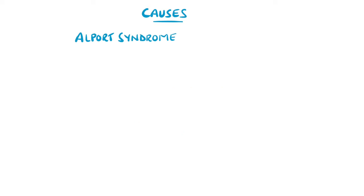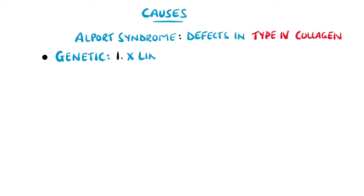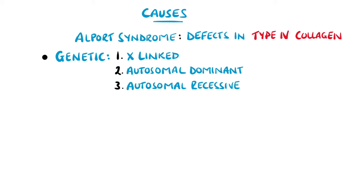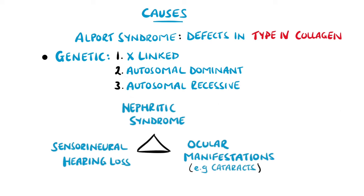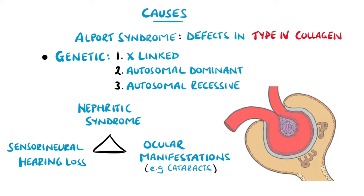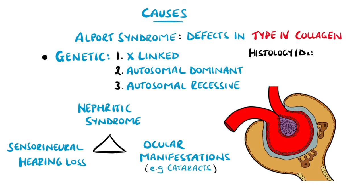Alport syndrome is a genetic condition featuring defects in type 4 collagen, usually inherited in an X-linked fashion, but can be autosomal recessive or dominant in some cases. It typically affects the kidneys, the inner ear, and the eyes, manifesting as a triad of hematuria, progressive sensorineural hearing loss, and cataracts. It features lamellation of the glomerular basement membrane on electron microscopy — meaning the presence of abnormal additional layers giving a thicker appearance.